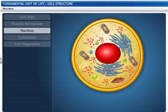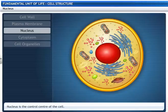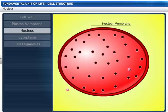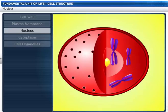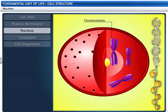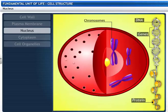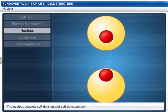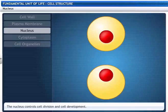Let's now look into the cell. This is the control center of the cell called the nucleus. The nucleus has a double-layered nuclear membrane that is perforated to allow substances to enter and leave. The nucleus contains chromosomes, which carry hereditary information and are composed of DNA and proteins. Functional segments of DNA are called genes. The nucleus plays a major role in cell division and controls cell development.